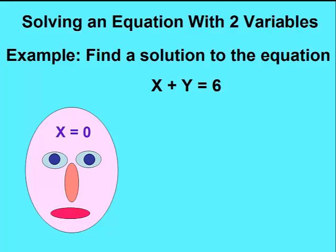x equals 0 is a good place to start. We'll substitute this value in for x, and then figure out what y would need to be. Since x is 0, y would just have to be 6. This gives us a solution to our two-variable equation.